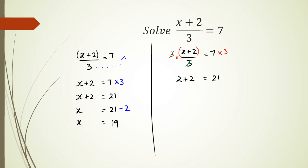And now, to get rid of the positive 2, I need to subtract 2 from both sides. And I have x on the left-hand side. 2 minus 2 is 0. 21 minus 2 is 19.